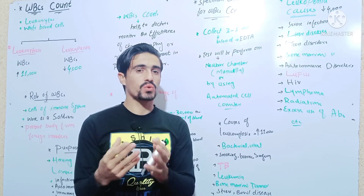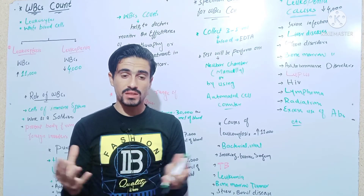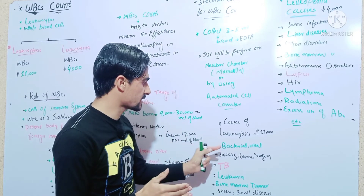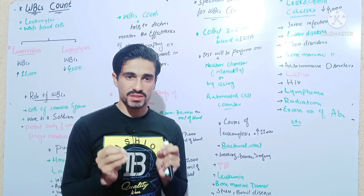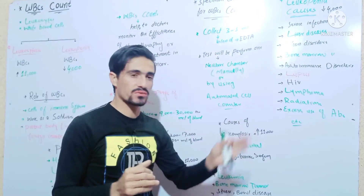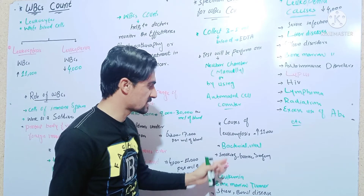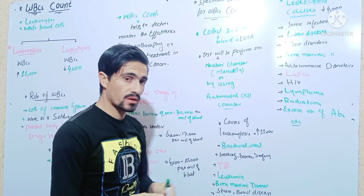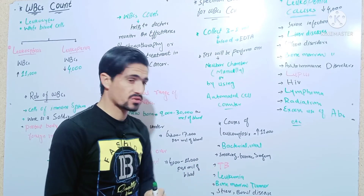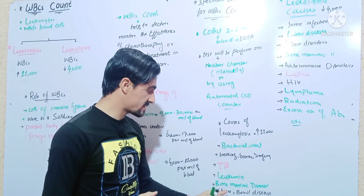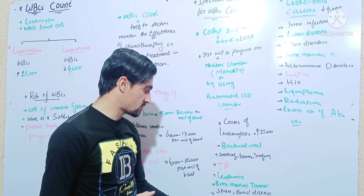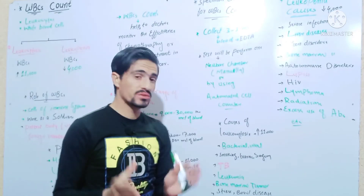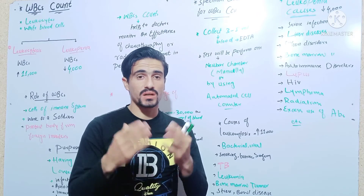Leukocytosis, meaning WBC above 11,000, can be caused by bacterial or viral infections. Other causes include smoking, burns, surgery, tuberculosis, leukemia, blood cancer, bone tumors, stress, bone disease, rheumatoid arthritis, autoimmune disease, allergic conditions, asthma, tissue damage, and the use of corticosteroids.